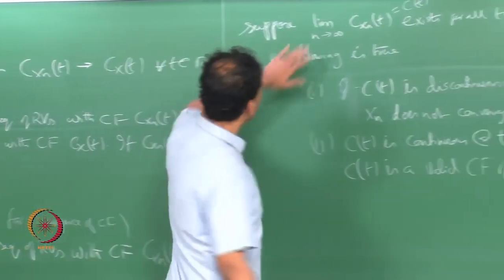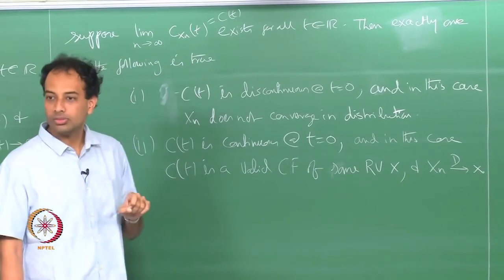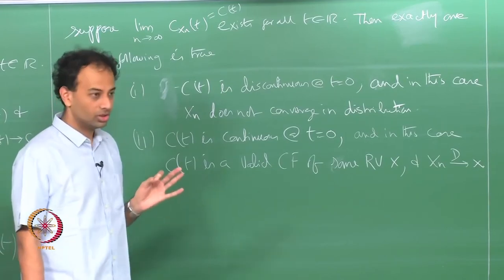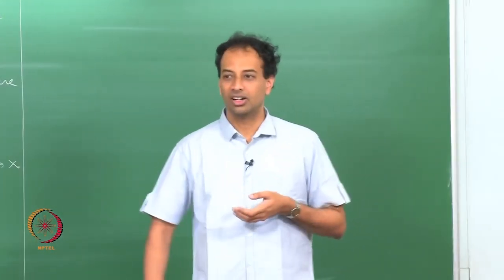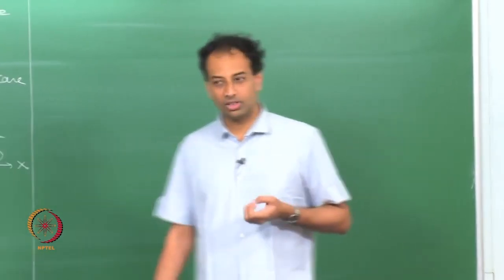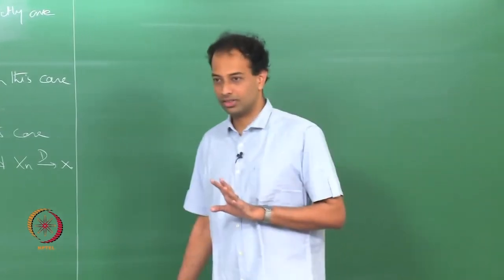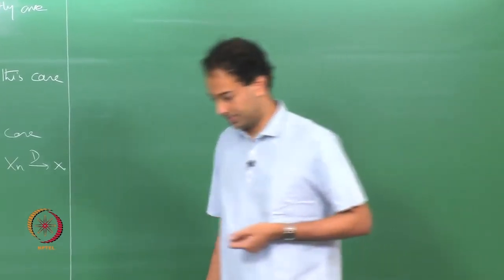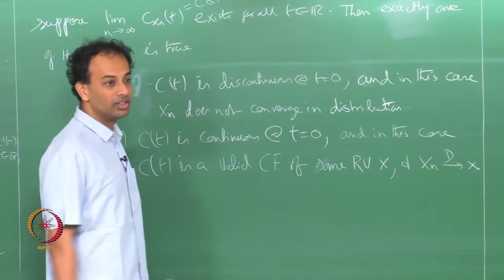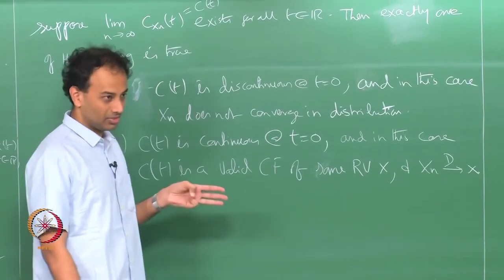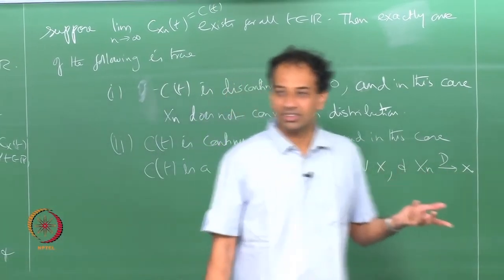So there are only two possibilities. You check c(t) for continuity at t equal to 0. If c(t) is discontinuous at t equal to 0, it cannot be a characteristic function — since characteristic functions are in fact uniformly continuous — and you can conclude x_n does not converge in distribution to anything, meaning the CDFs do not converge. The other possibility: if you have continuity at t equal to 0, then it automatically becomes a valid characteristic function, and you have convergence in distribution.